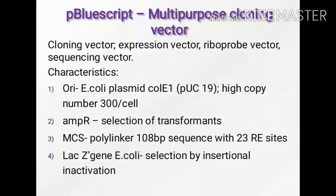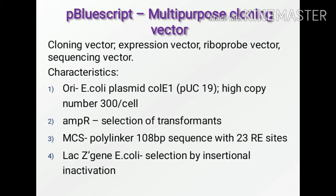P-bluescript is called a multipurpose cloning vector because it can be used as a cloning vector, expression vector, riboprobe vector, and sequencing vector. It has ColE1 origin of replication taken from PUC-19 which gives a high copy number of nearly 300 per cell, an ampicillin resistance gene for selection of transformants, a multiple cloning site polylinker with 108 base pairs having 23 restriction sites, and a lacZ gene of E. coli helping in selection by insertional inactivation.